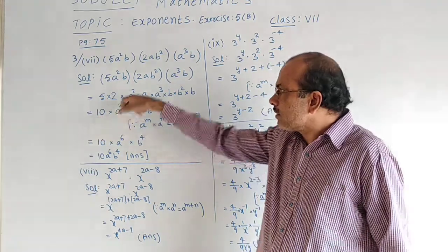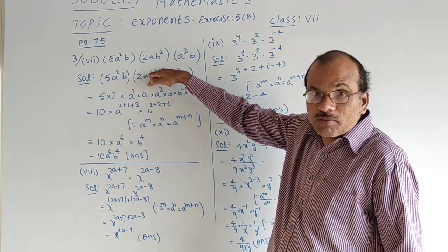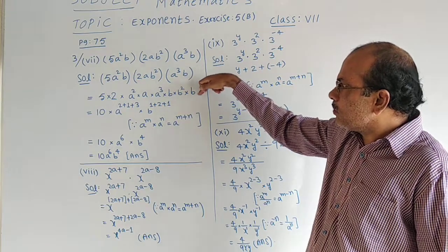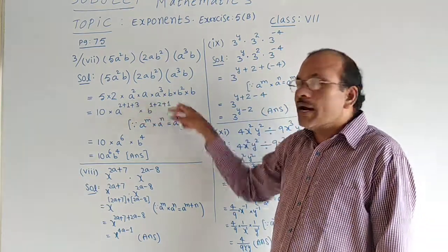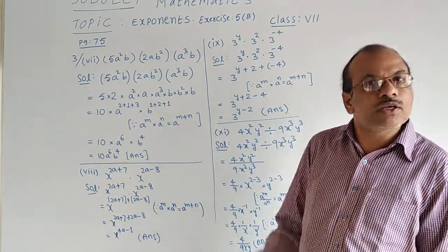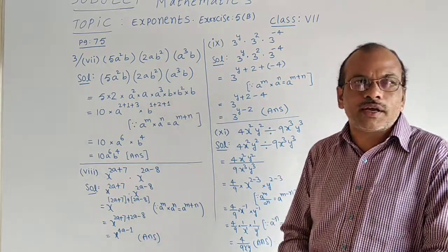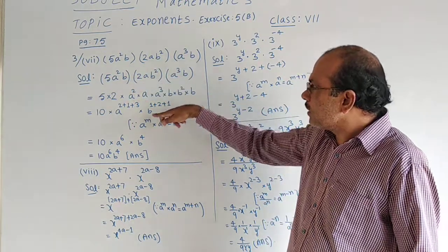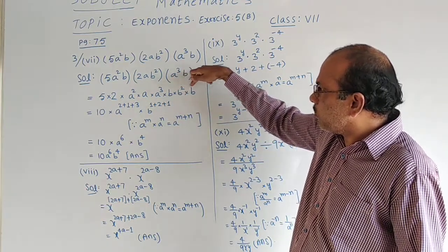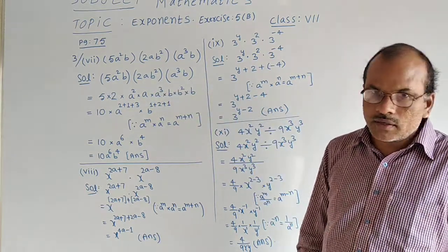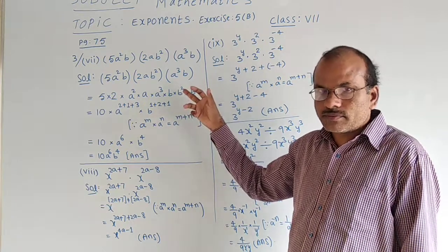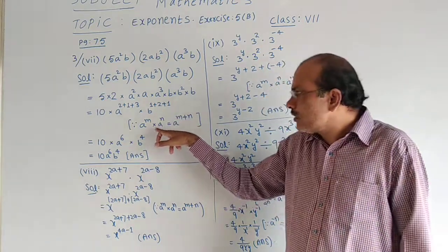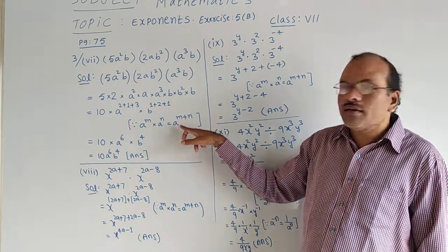5 twos are 10. Here a², a to the power 1 (nothing means 1), a to the power 3; b to the power 1, b to the power 2, b to the power 1. Bases are equal and they are in multiplication form, so their powers must be added. Then a to the power of 2 plus 1 plus 3, into b to the power of 1 plus 2 plus 1. Already we have done this type of sum in the previous class with the formula: a^m × a^n = a^(m+n).